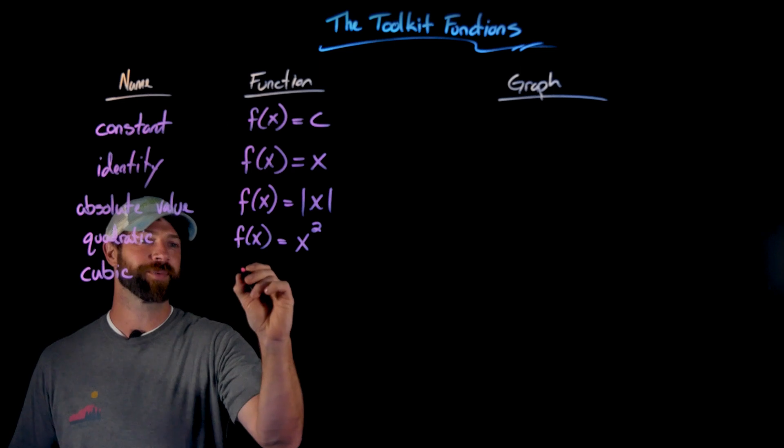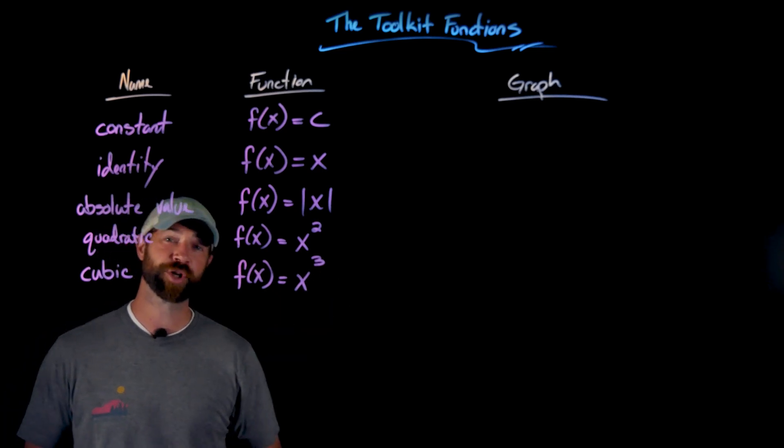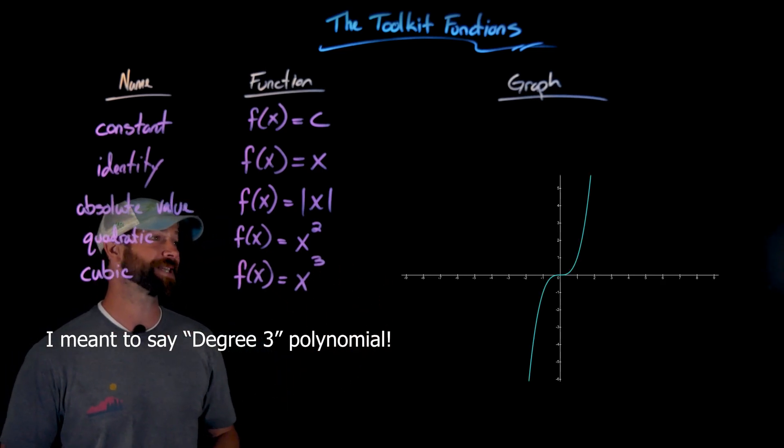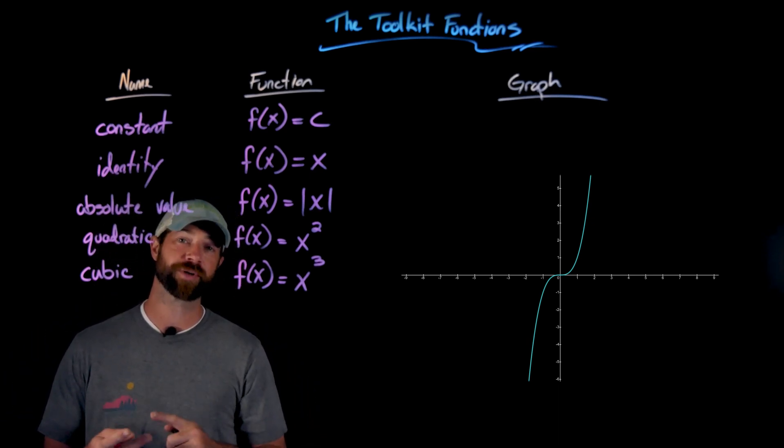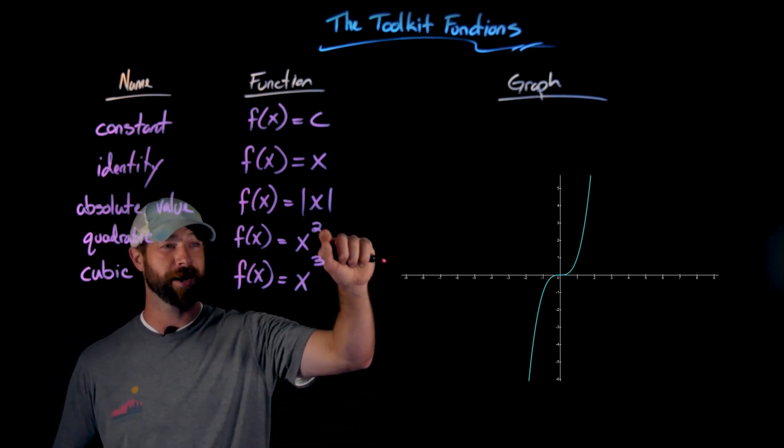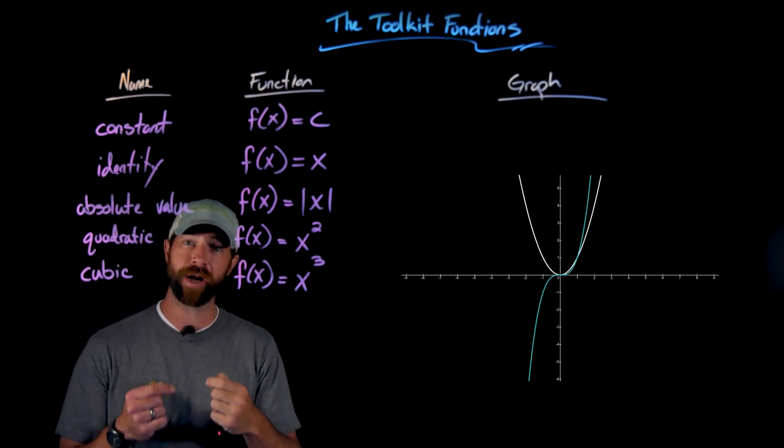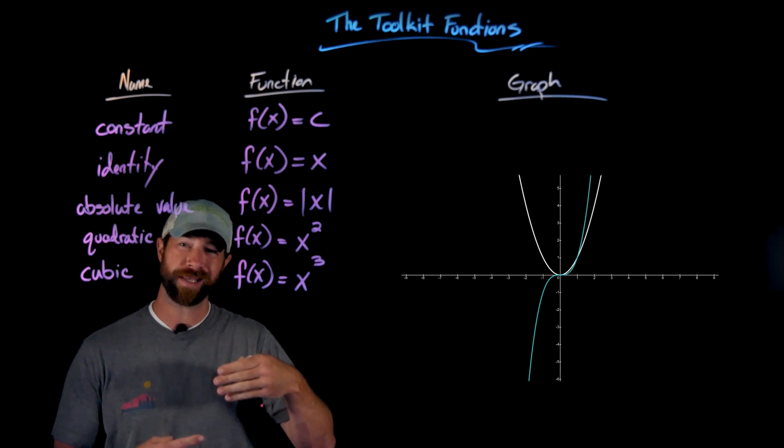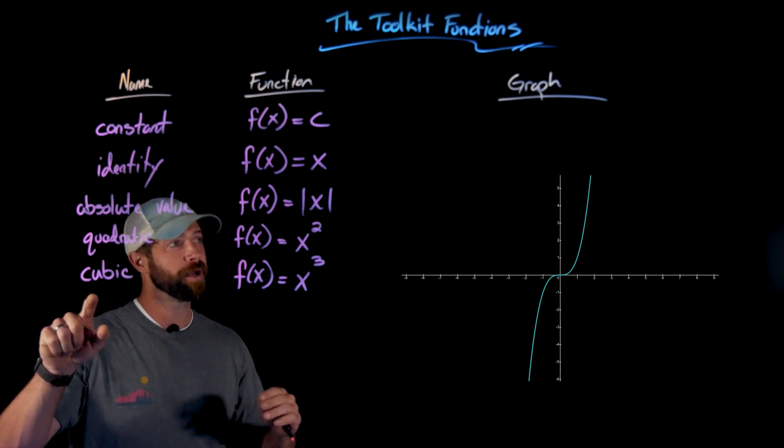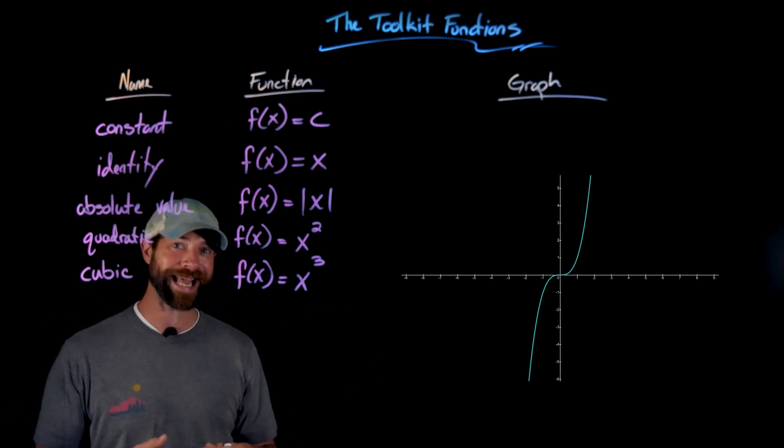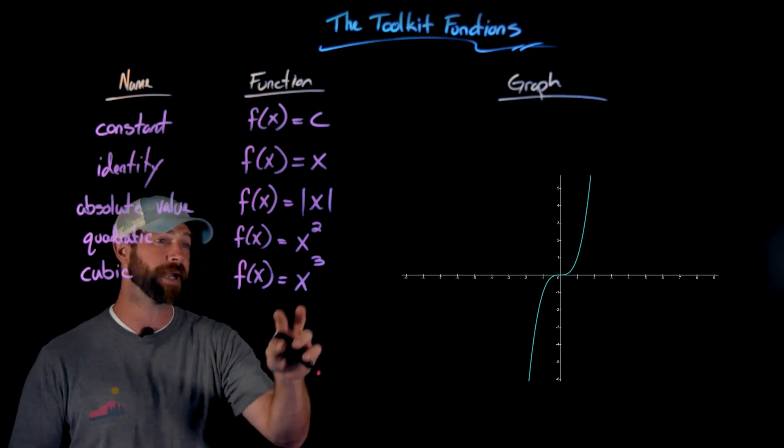After the quadratic function, we have the cubic function, which is f(x) equals x cubed. This is cubic because it's a degree three polynomial. Here's its basic shape. Importantly, you'll notice a significant difference between the quadratic and the cubic. The quadratic, because this is an even exponent, doesn't have any negative outputs—when you square any negative or positive number, you become positive or non-negative. With the cubic, when we cube a negative number we get negatives out, so we don't get this parabolic shape. We get this little s-curve shape when we have a cubic.